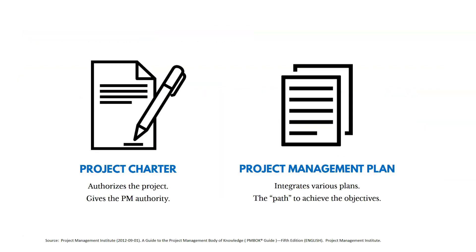There are really two key documents we're going to generate in this knowledge area. The project charter authorizes the project and gives the PM authority to start using resources. And then the project management plan integrates various plans together — it's really the path to achieve the objectives of the project, documenting how we're going to accomplish the scope and meet the goals we've set out to accomplish.